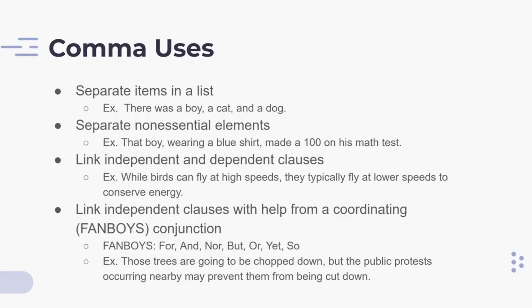There are four uses of commas on the SAT. The first is to separate items in a list. In this example, there was a boy, a cat, and a dog. There should be a comma after boy and a comma after cat, and not after dog. The basic rule is to put a comma after each element in a list, except for the last element.